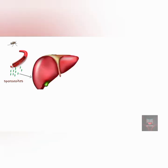These sporozoites enter the liver and undergo asexual reproduction to produce merozoites. This stage is known as the primary exo-erythrocytic cycle because it takes place outside of the red blood cell.